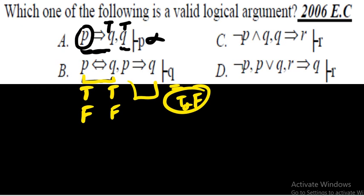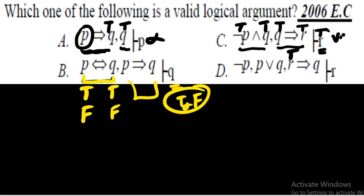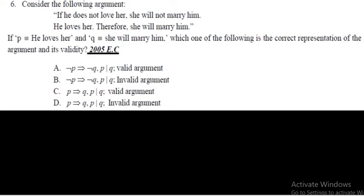For choice (c), the premises are ¬p∧q (true) and q→r (true), with conclusion r. Since the conjunction is true, q is true. Since q is true and q→r is a true premise, r must necessarily be true. The conclusion r becomes true, so the answer is (c) — the argument is valid.